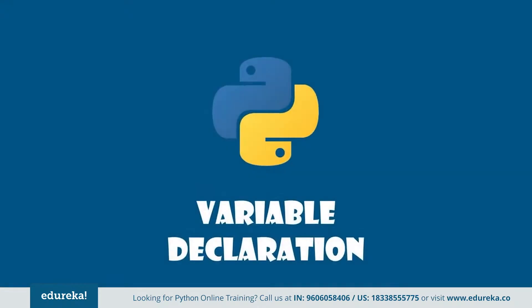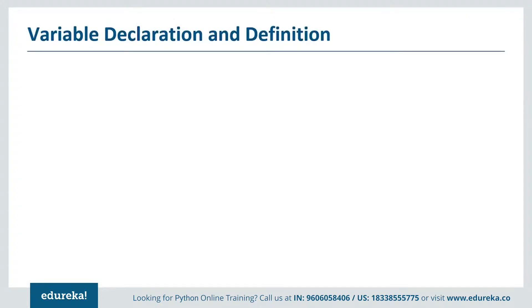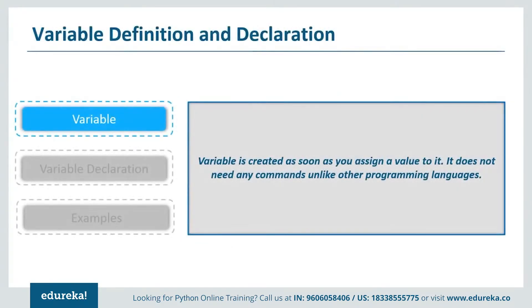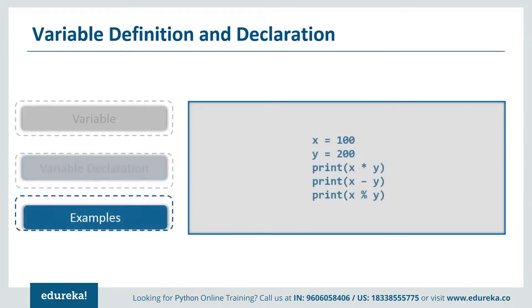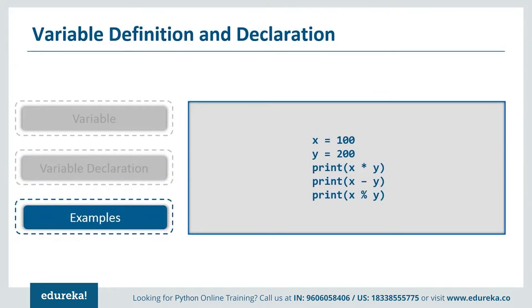Now let's move on to variable declaration. A variable is like a memory location where you store a value, which you may or may not change in the future. In Python, to declare a variable you just assign a value to it — no additional commands needed unlike C, C++, or Java. For example, we have X assigned 100 and Y assigned 'edureka'. When you print these, you get 100 and edureka. You can also perform arithmetic operations like addition, multiplication, subtraction, or division on these variables.